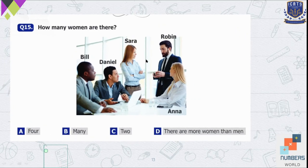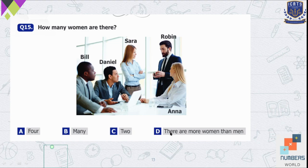Question number 15 — how many women are there? We can see there are three men: Bill, Daniel, and Robin, and there are two women: Sarah and Anna. Option A is four — no. Option B is many — also incorrect. Option C is two. Option D says there are more women than men — that is incorrect. So option C is the correct one because there are two women.